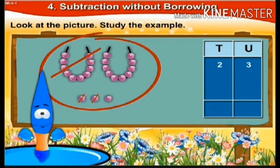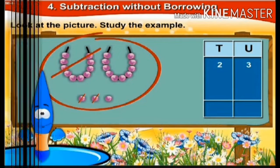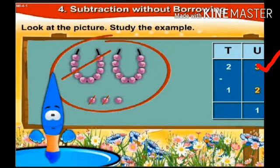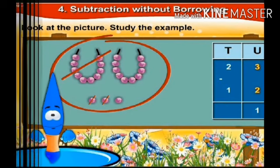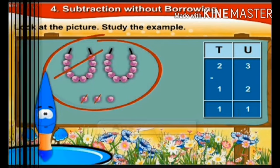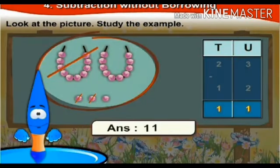Let's arrange them in the column: two separate beads in the units place and one tens in the tens place. Starting with the units place: three units minus two units is one unit. Moving on to the tens column: two tens minus one tens is one tens. The answer is one tens and one unit, that is eleven beads.